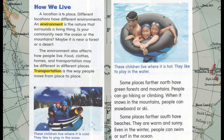This is called How We Live. A location is a place. Different locations have different environments. An environment is the nature that surrounds a living thing. Is your community near the ocean or the mountains? Maybe it is near a forest or a desert. The environment also affects how people live.